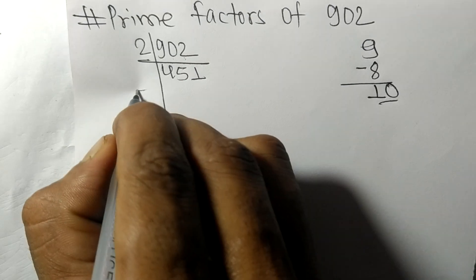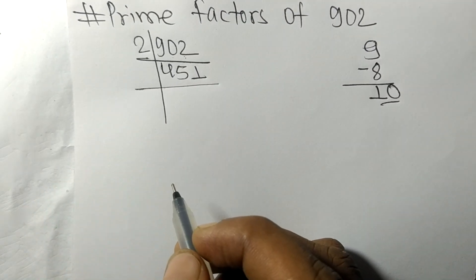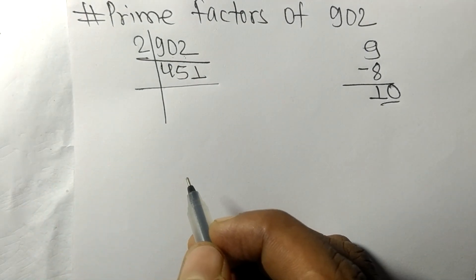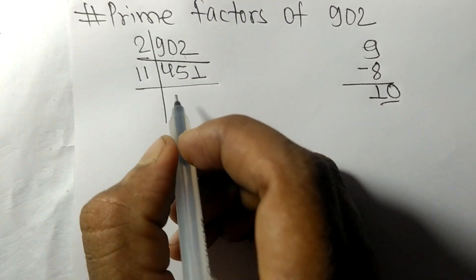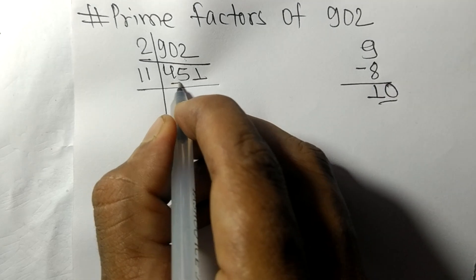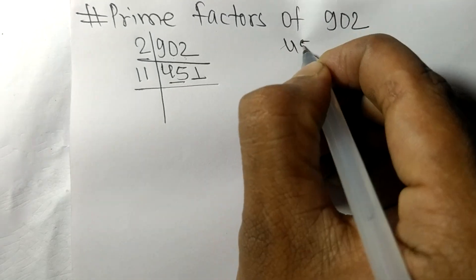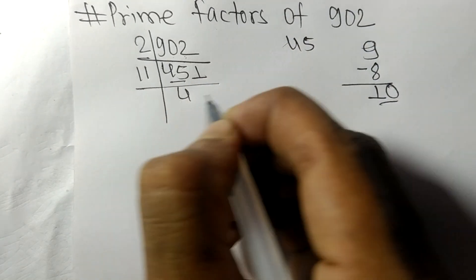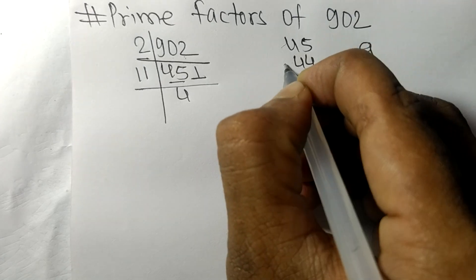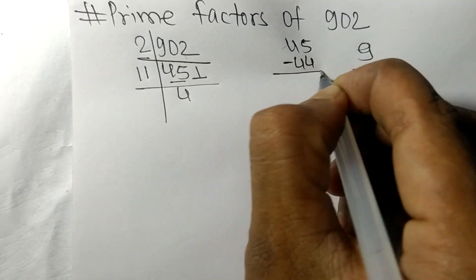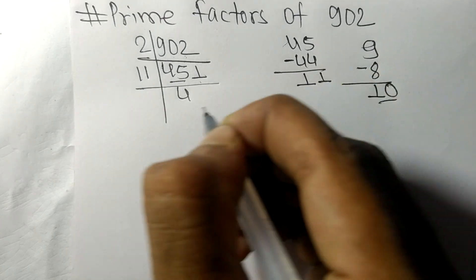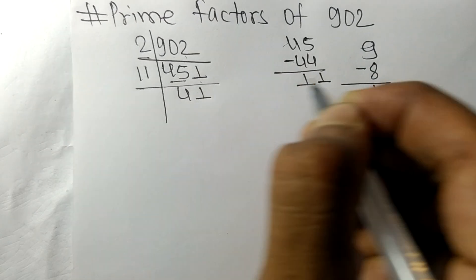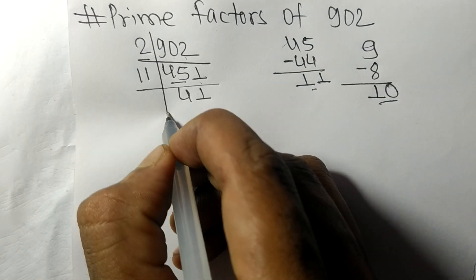Now we got 451, which is exactly divisible by 11. First we have 45, so 11 times 4 is 44. On subtracting we get 1, and this one becomes 11. 11 times 1 is 11.